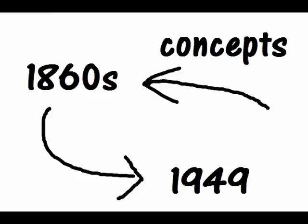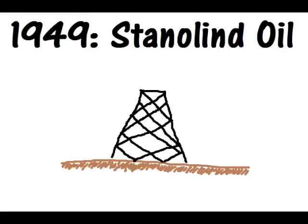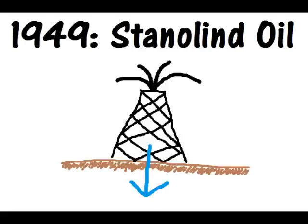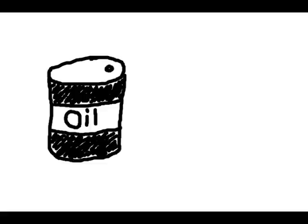But it wasn't until 1949, when St. Illinois oil produced the first frack well, that the process of hydraulic fracturing was truly developed. Later, it was discovered that fracking could be used not only to increase oil production, but also to recover unconventional natural gases.